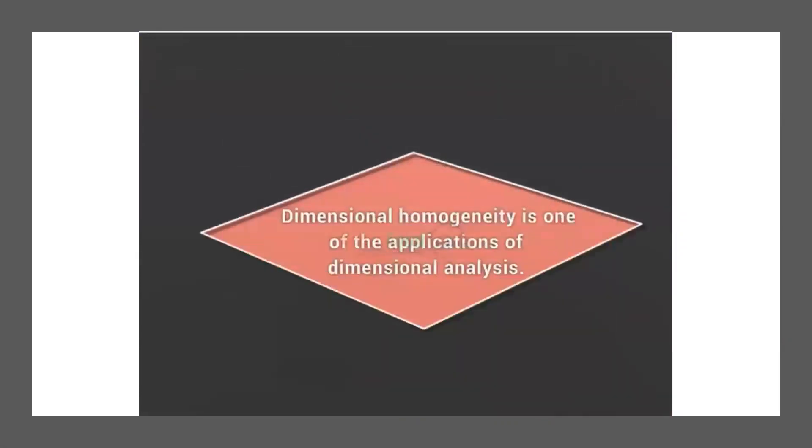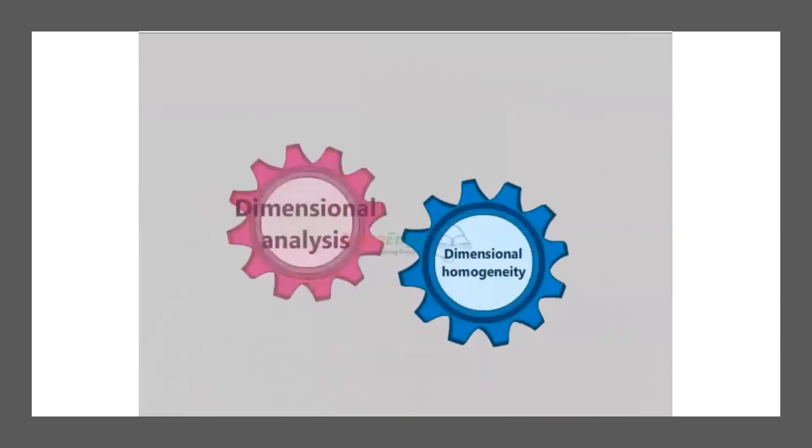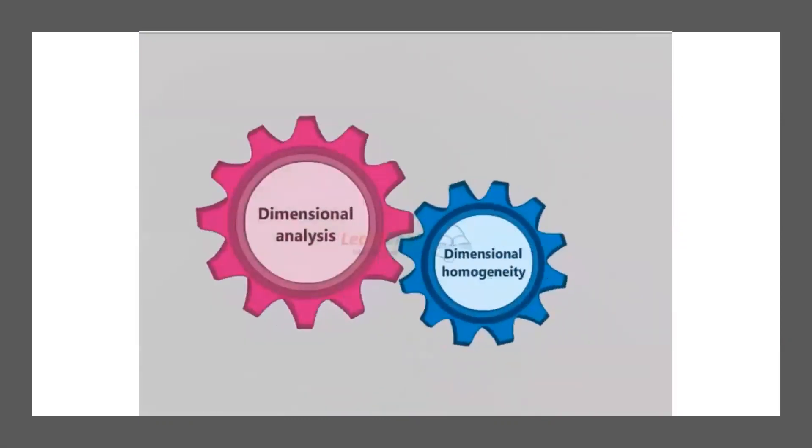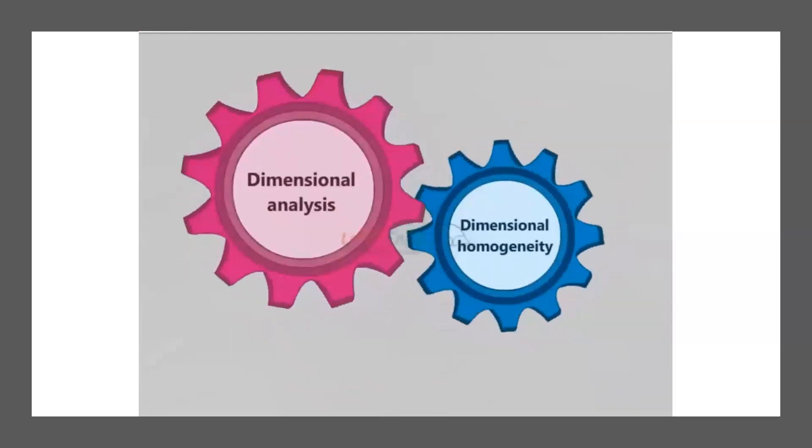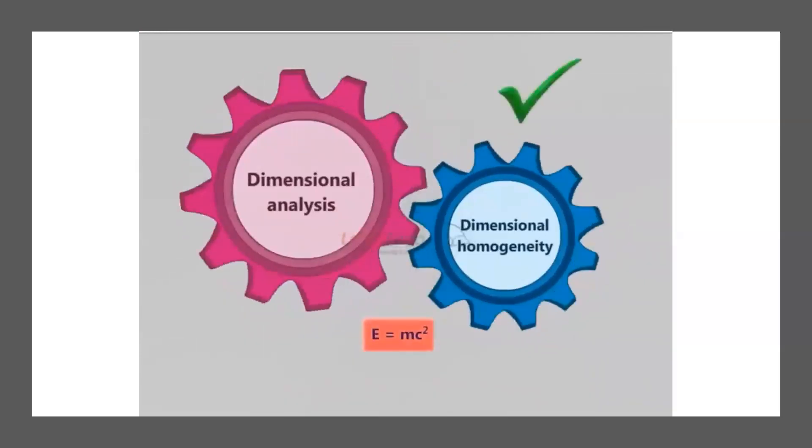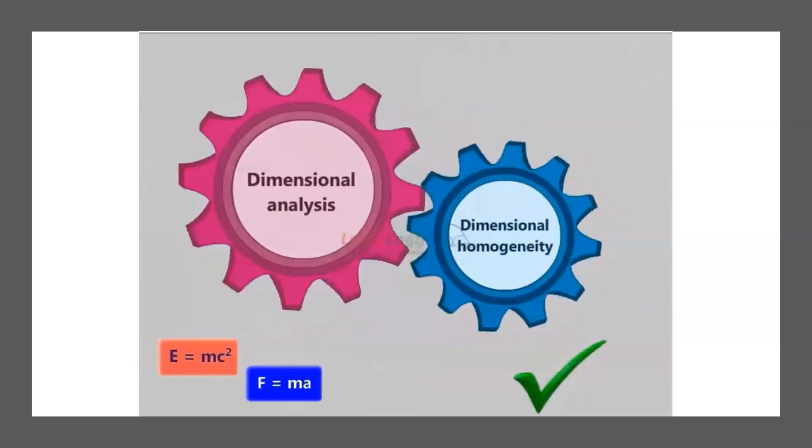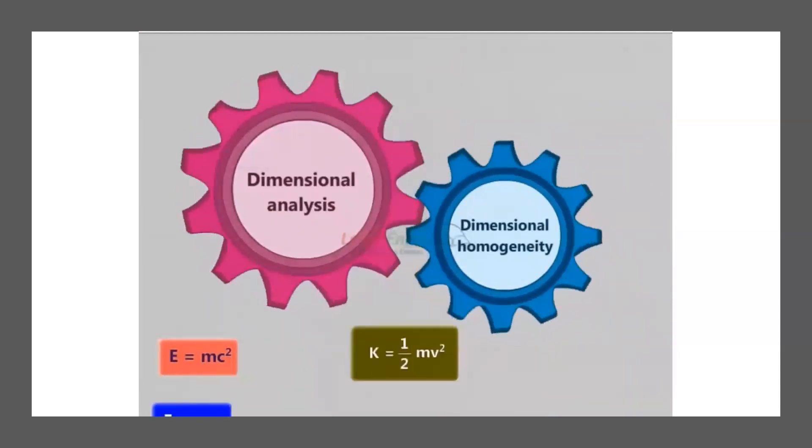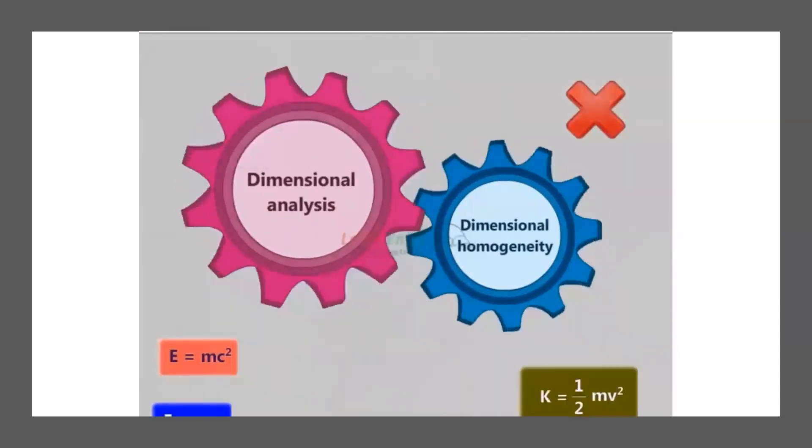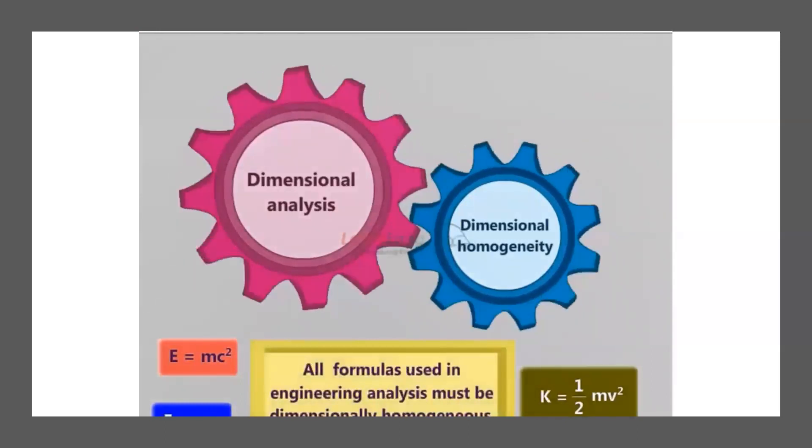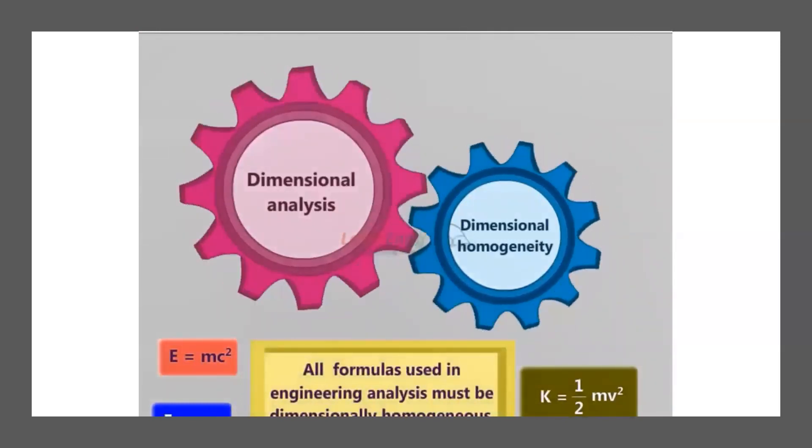Dimensional homogeneity is one of the applications of dimensional analysis. The Einstein equation E = mc² is a dimensionally homogeneous equation. Newton's second law F = ma is a dimensionally homogeneous equation, but K = ½mv² is a non-dimensionally homogeneous equation. All formulas used in engineering analysis must be dimensionally homogeneous.